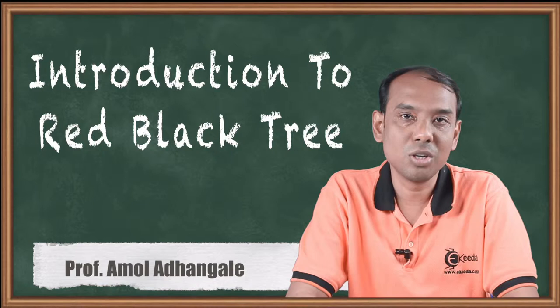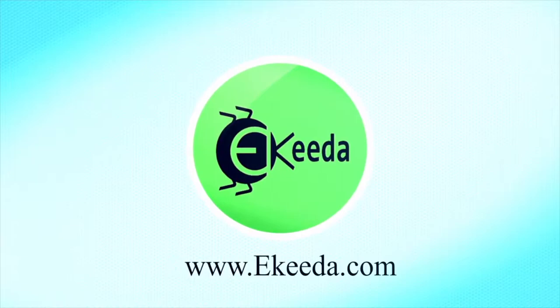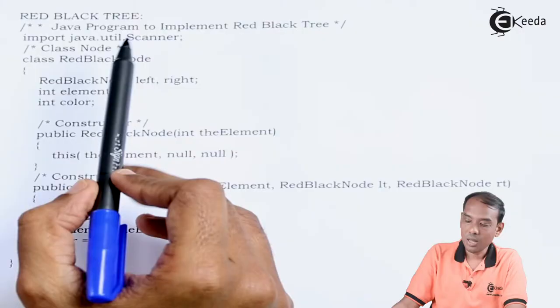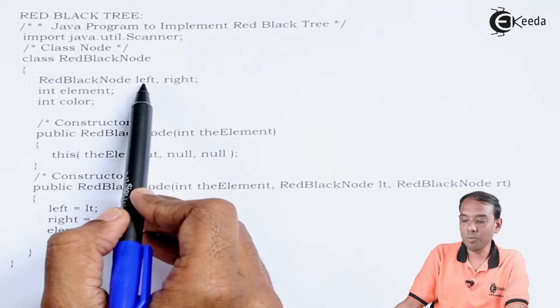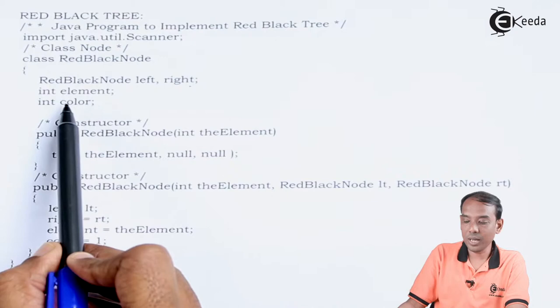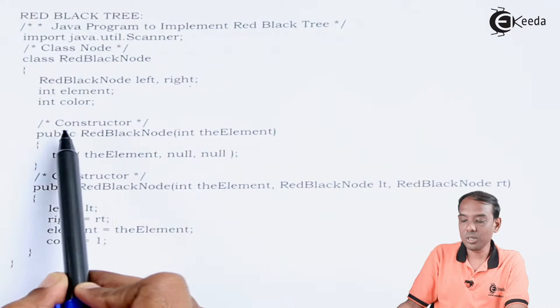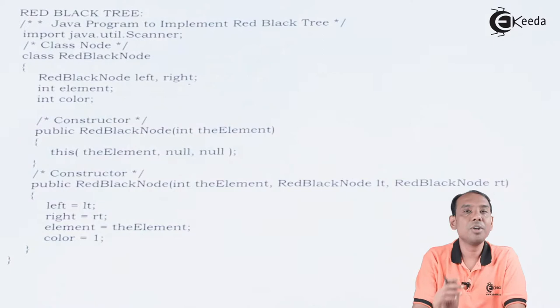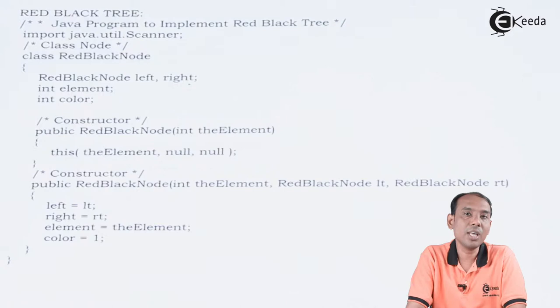It is a self-balancing binary search tree. I have defined a class called RedBlackNode. Inside that I have created two reference variables, left and right. After that I have created variables element and color. Then we will go for the constructor of the class — you know it is the constructor by matching the class name and the constructor name. We have public RedBlackNode with the parameter element.